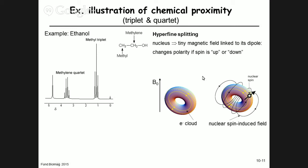For a spin-½ nucleus like hydrogen, the dipole field has only two orientations: up or down. So this tiny magnetic field from an adjacent nucleus is either in one direction or the other — nothing in between. It therefore changes the electron cloud configuration in a discrete form, corresponding to whether the neighboring spin is up or down, and that affects the magnetic field at the nearby nucleus.